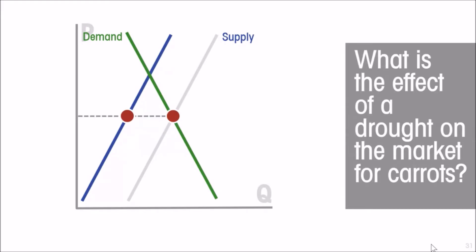With the shift to the left of the supply curve, we now have excess demand for carrots at the original price. Sellers are going to realize it is in their interest to charge a higher price and still get everything sold. The shortage is addressed on both sides: the higher price increases the quantity supplied, and on the demand side, some people who were previously willing to buy carrots are no longer willing to buy as many — so quantity demanded also falls.